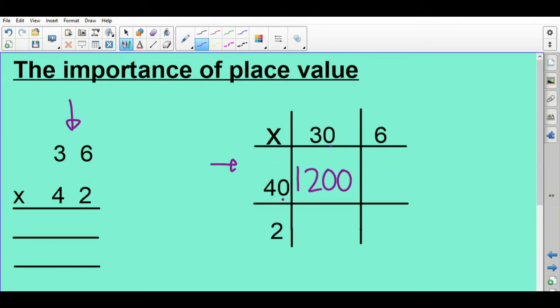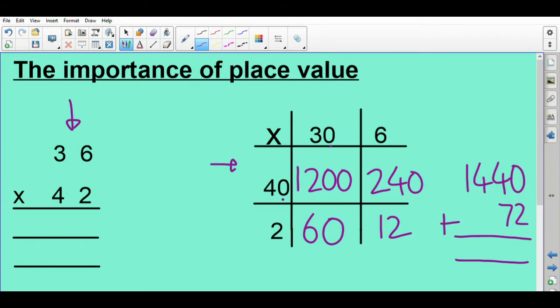40 times 6, well 4 times 6 is 24, times by 10 is 240. So you can see the importance of place value so you know how to multiply by 10, 100, 1000. 2 times 30 here is 2 times 3 is 6, 2 times 30 must be 60 then. And 2 times 6 is 12. So now I can just add those two bits up. So I've got 1440 there and then I've got 72 there. Add those together, that's the calculation I'm going to get.